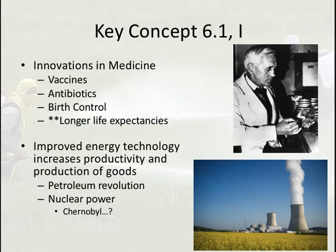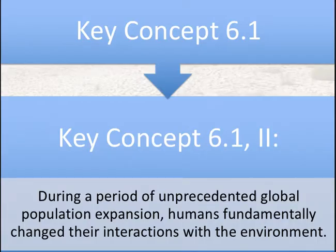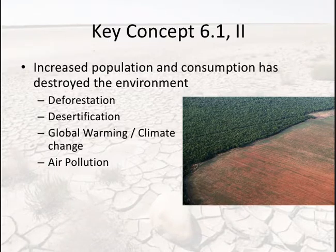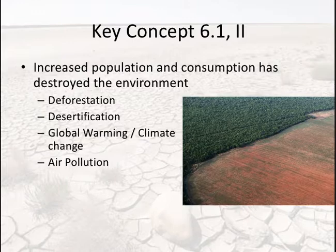Key Concept 6.1, Roman numeral 2 says: 'During a period of unprecedented global population expansion, humans fundamentally changed their interactions with the environment.' So we're synthesizing the medicines and food production that allow for more people with the idea that a larger population is going to destroy the world. Increased population and consumption are destroying the environment. Deforestation is pictured here in the Brazilian Amazon. Desertification occurs in places where water is over-consumed and dries up, leaving land no longer able to sustain agriculture.